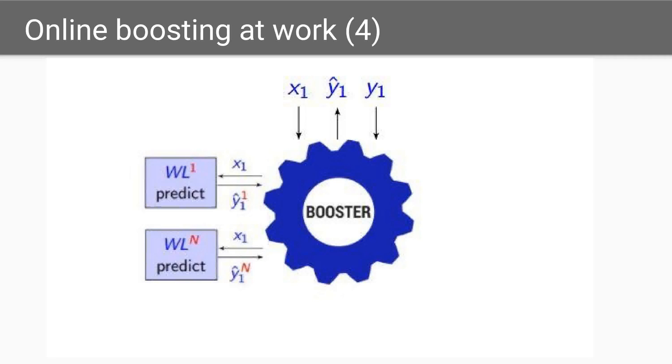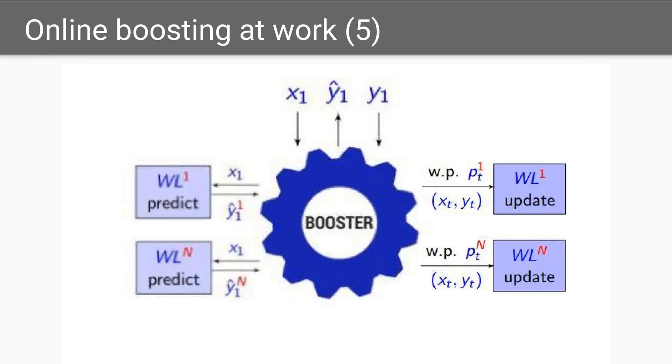And then, with the input of the data y1 of the pair x1, y1, n updates the weak learners, each with a certain probability. This process, shown for t equals 1, is repeated for the t moments of the time horizon.